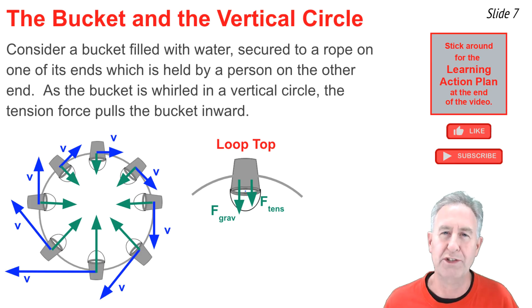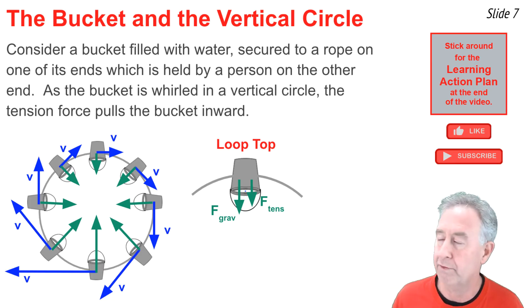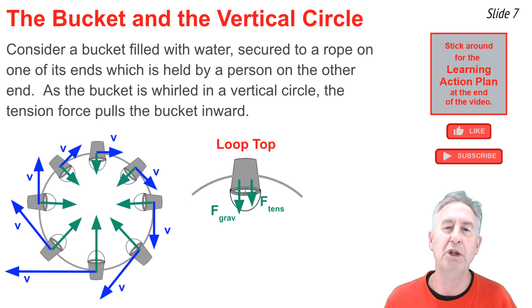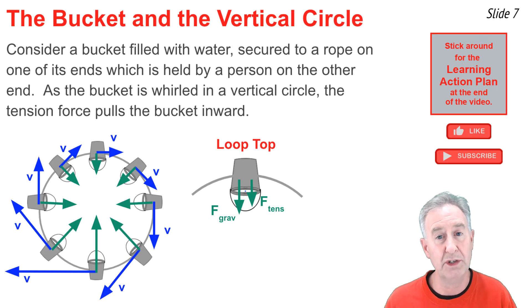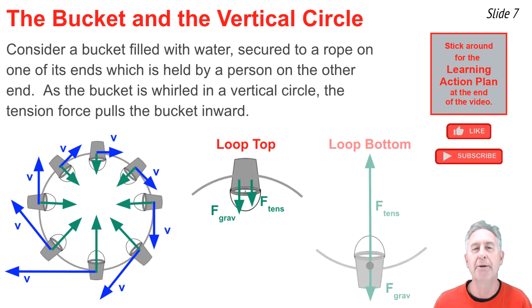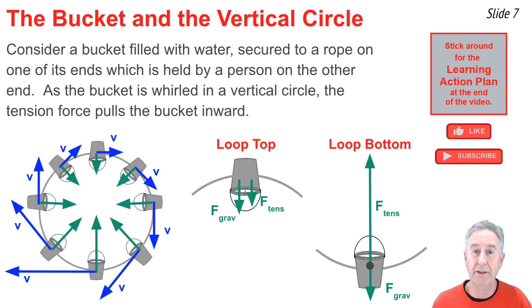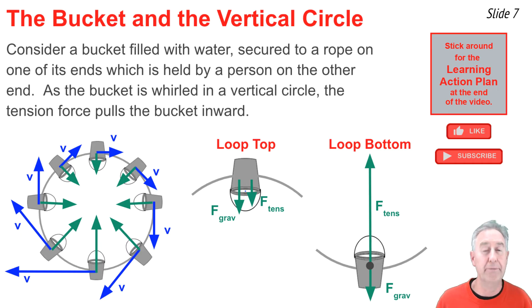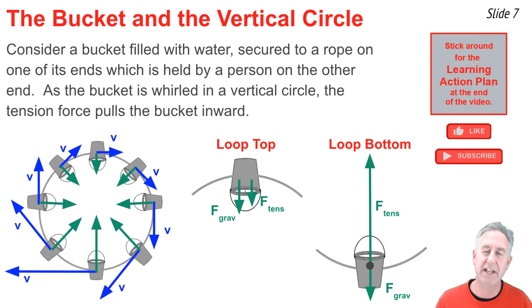Let's consider two locations along the perimeter of that circle. At the top of the loop, the two forces acting on the bucket — gravity and tension — are both acting downwards and both towards the center of the circle, so they each supply some force to meet the centripetal force requirement. But at the bottom of the loop, the tension force acts upwards towards the center, while the gravity force acts outwards away from the center. For this reason, the tension force must be much greater than the gravity force so that there is a net inward force.